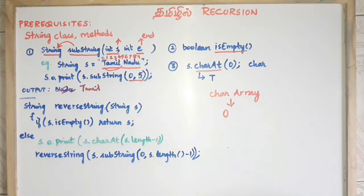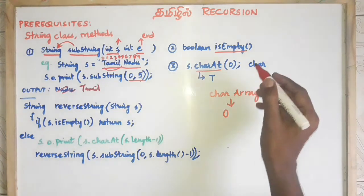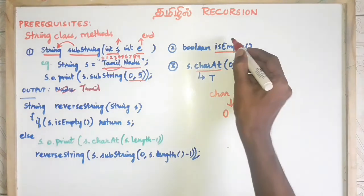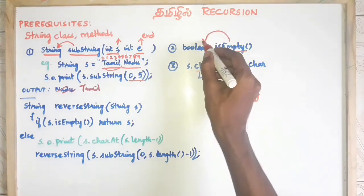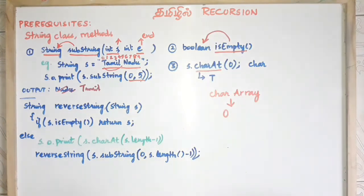The next method is isEmpty. isEmpty returns a boolean value. If there is no content in the string object, it is empty — it returns true.